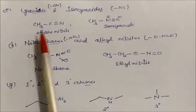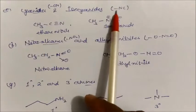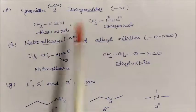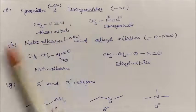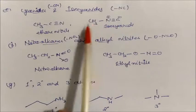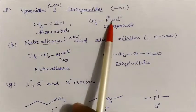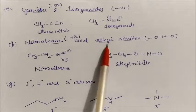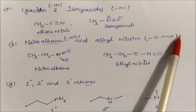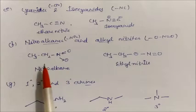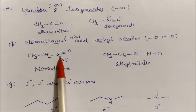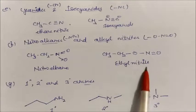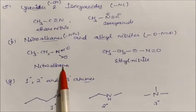Next are cyanides and isocyanides. Isocyanide is written as NC— and cyanide as CN—. For example, ethane nitrile and methyl isocyanide are functional isomers. Similarly, nitroalkanes (R-NO2) and alkyl nitrites (R-ONO) are functional isomers — in nitroalkanes the carbon is attached to nitrogen, while in alkyl nitrites the carbon is attached to oxygen.